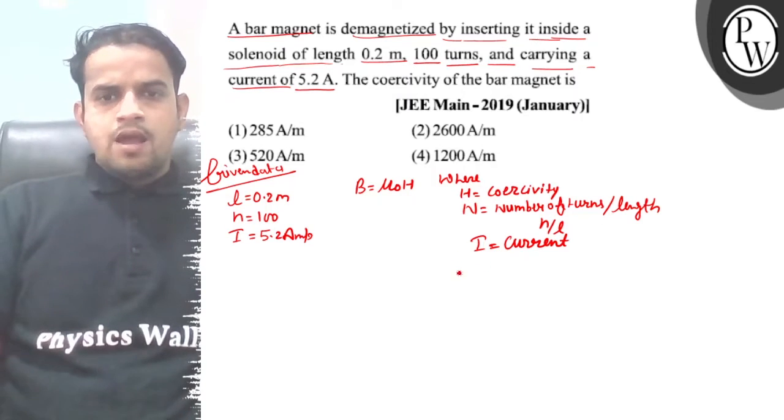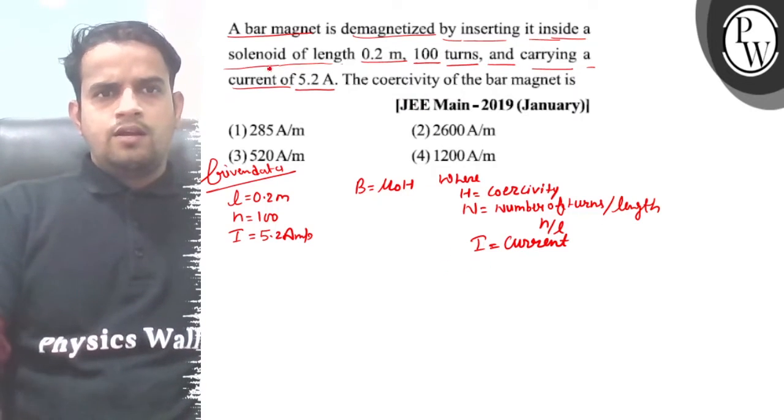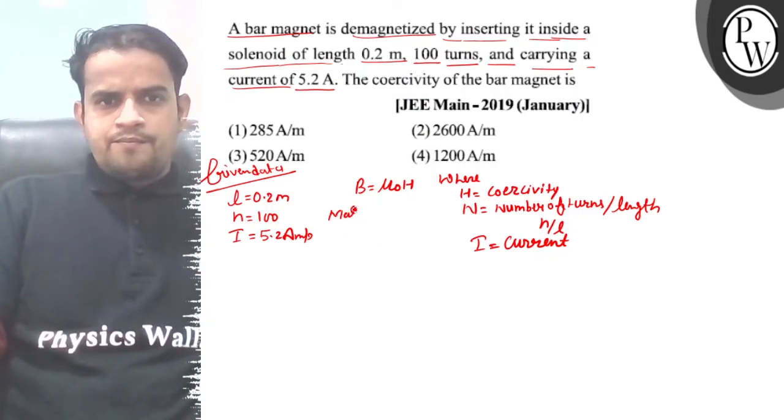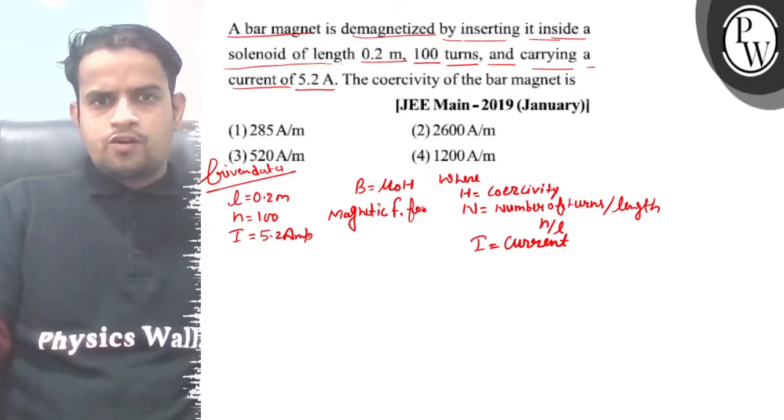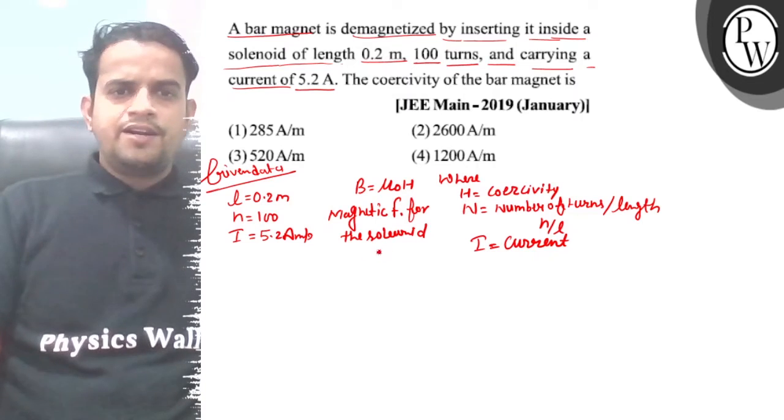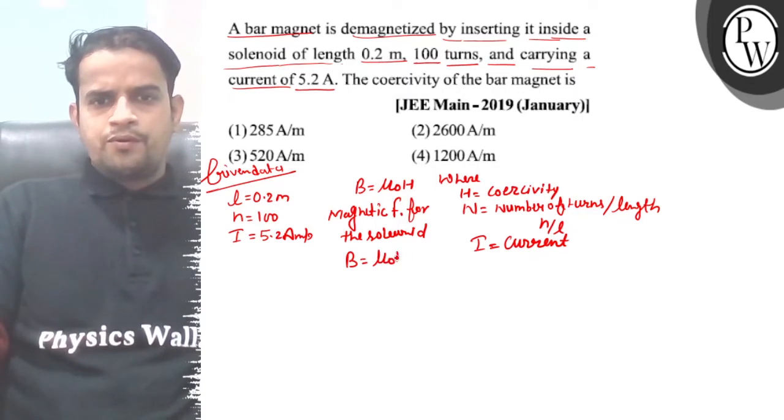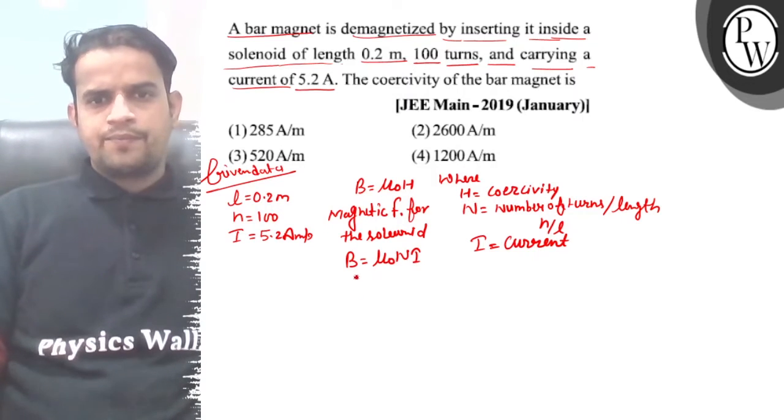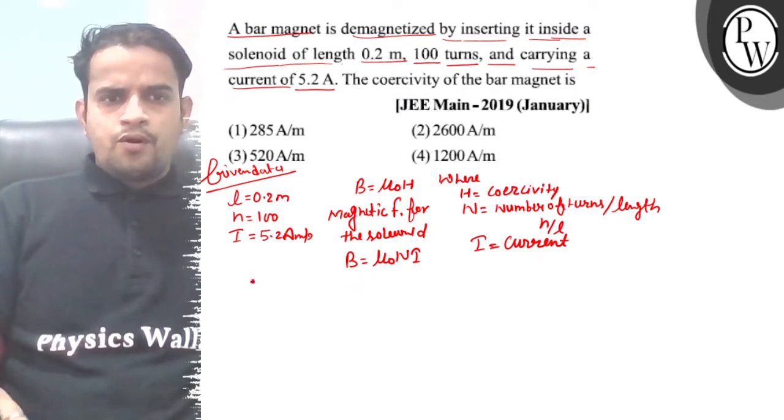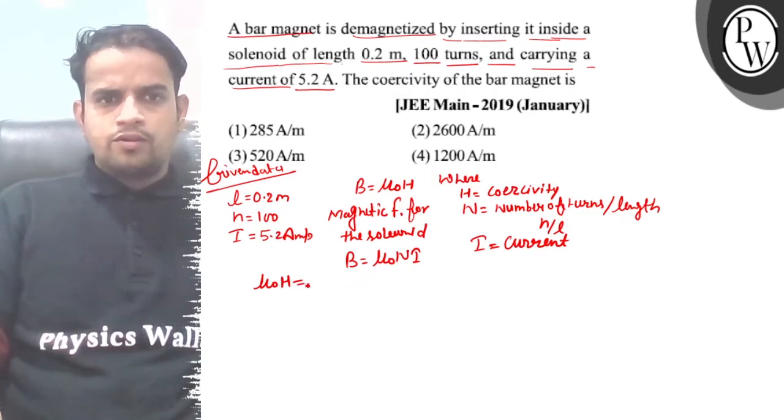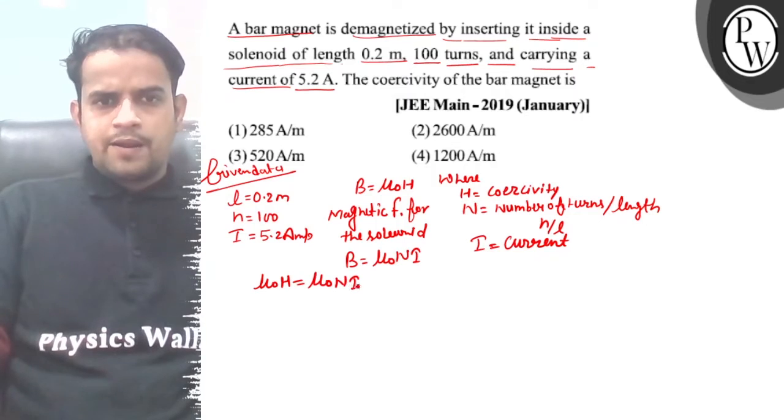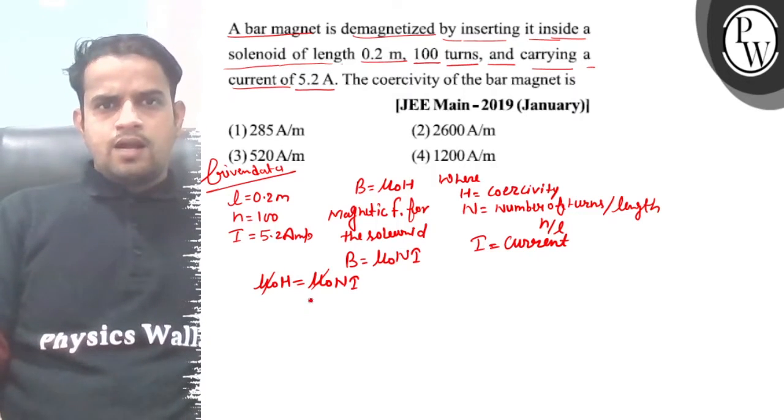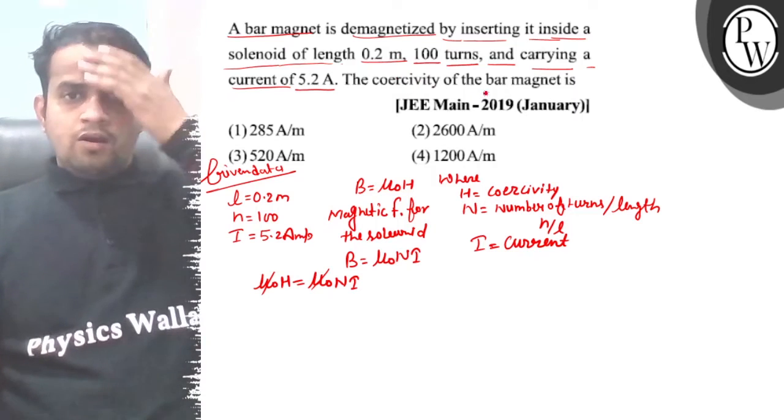The magnetic field for the solenoid is B equals μ₀nI. Clear. Then μ₀H equals μ₀nI. We can cancel out μ₀.